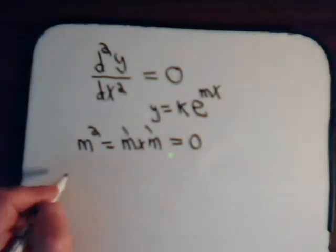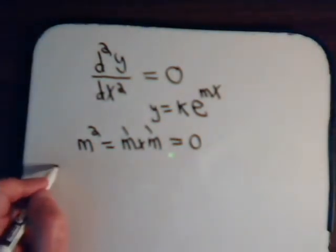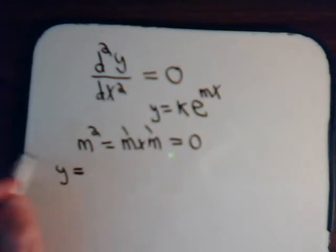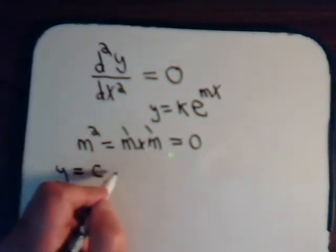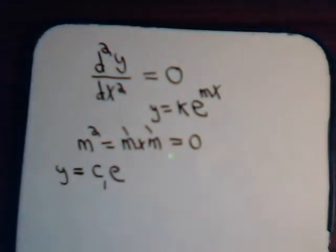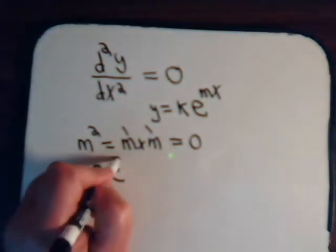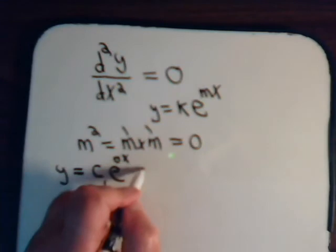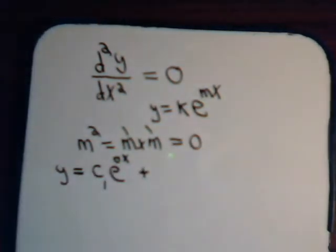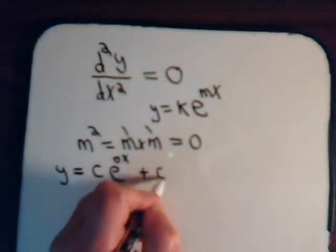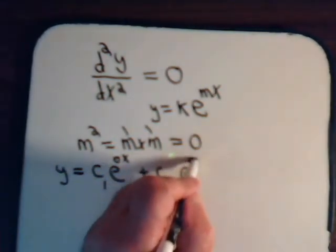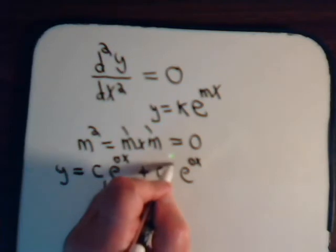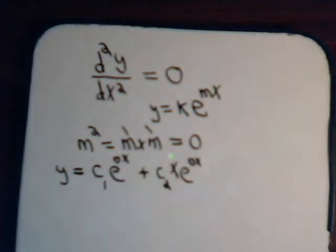So in general, the solution to it would be y equals some constant, say c1, times e to the mx, where m is zero, plus another constant, e to the mx, m is zero, but that's a repeated root. So we have an x here.